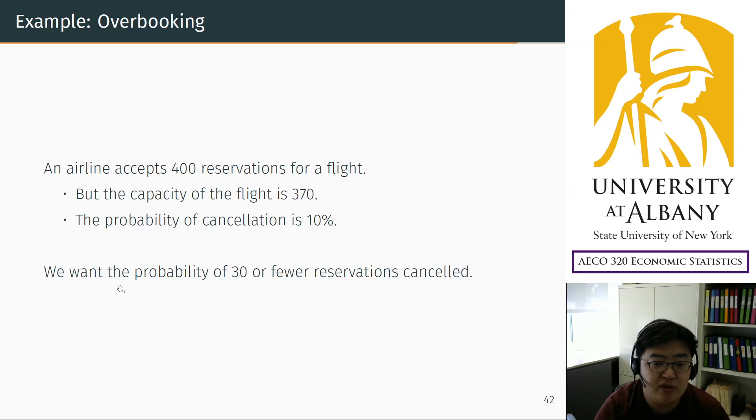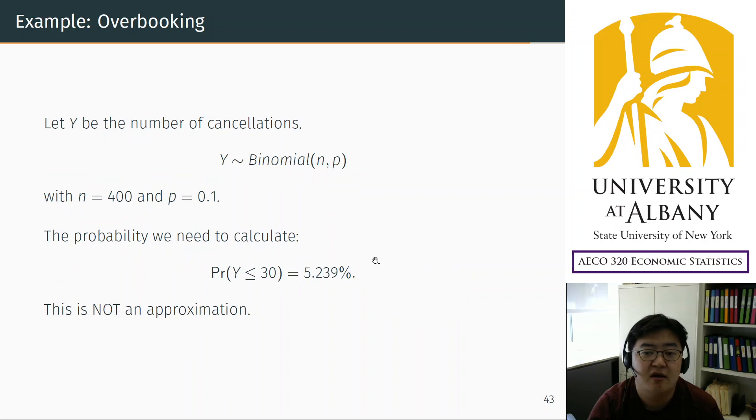We are going to calculate this probability with two different methods. First using the binomial distribution as we did in chapter 5, and also we will calculate the same probability using normal distribution approximation. Let's do this.